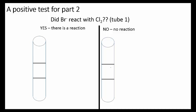So here's the reaction we'll be testing: we'll be adding bromide ions to chlorine gas. Will there be a reaction? If there is a reaction, this will be your product: 2Cl- + Br2 gas. We'll have to balance it — put a two there and a two there. So does this happen, or is it no reaction?